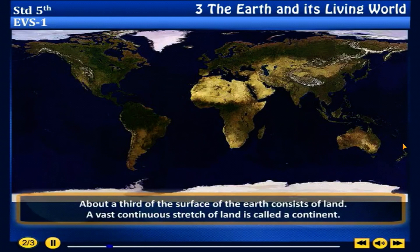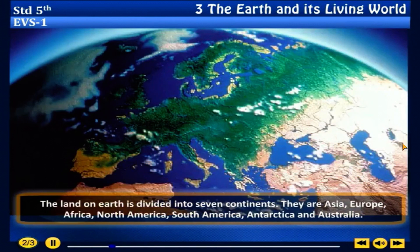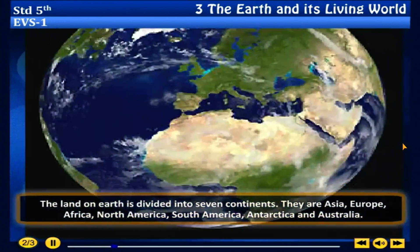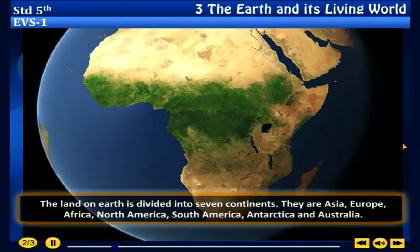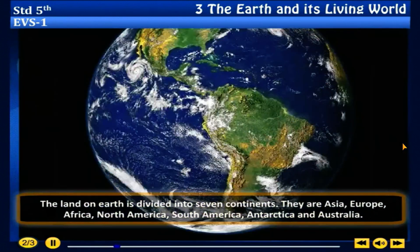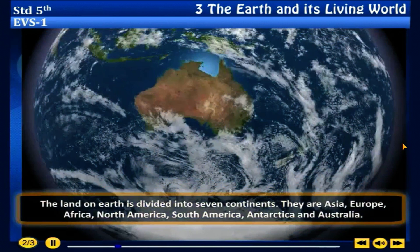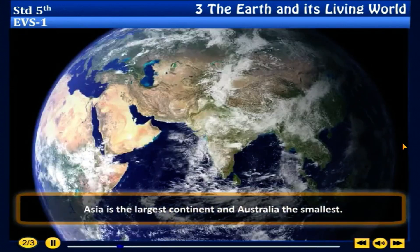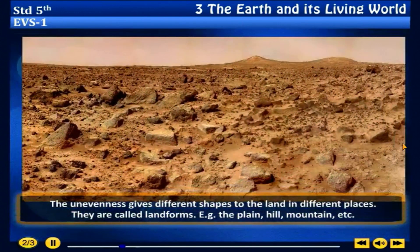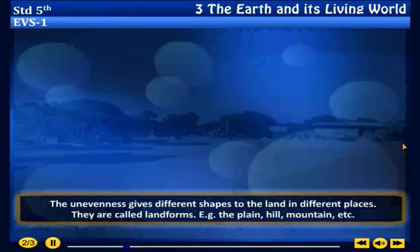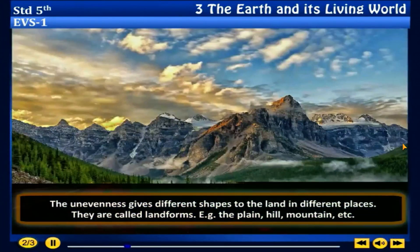About a third of the surface of the earth consists of land. A vast continuous stretch of land is called a continent. The land of the earth is divided into seven continents: Asia, Europe, Africa, North America, South America, Antarctica and Australia. Asia is the largest continent and Australia the smallest. The unevenness of the land gives different shapes in different places, called landforms — for example, plains, hills, mountains, etc.